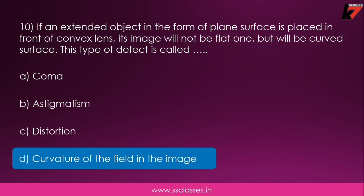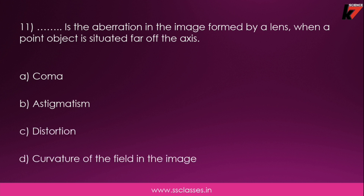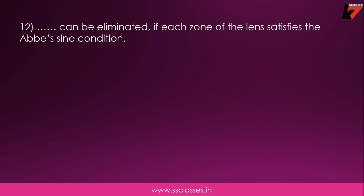Eleventh question: which aberration occurs in the image formed by a lens when a point object is situated far off the axis? Options are similar types of aberrations. The answer for this question is option B: astigmatism.